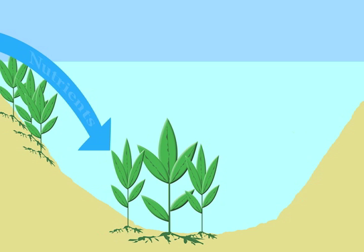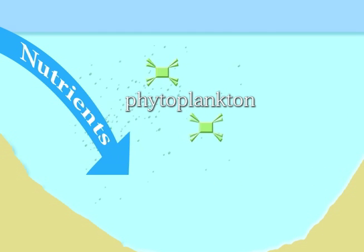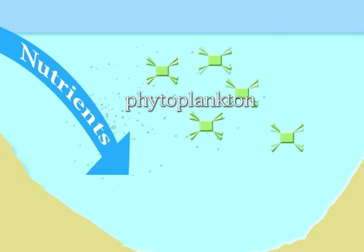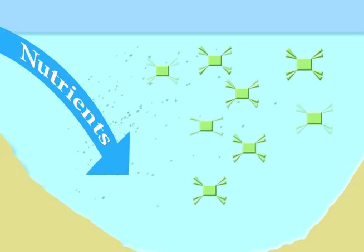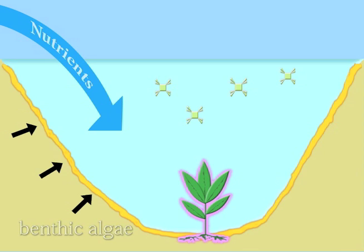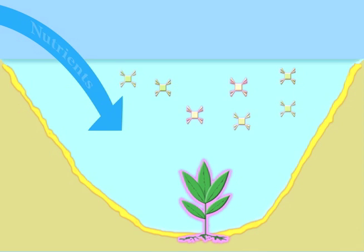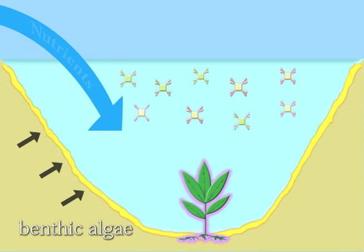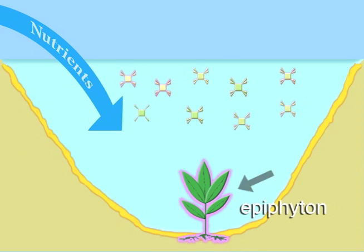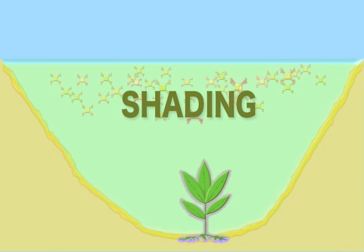As nutrients start to come into our ponds from outside sources like runoff, there is now an abundant source of food for the phytoplankton suspended in the water column. It now has a source to thrive, and this is where we start to see nutrient overload. This overload is experienced as humans become more apparent on the scene. At this point, all three types of algae have excess sources of food. The phytoplankton increases and spreads, causing shading to increase, and gradually the pond gets worse and worse.